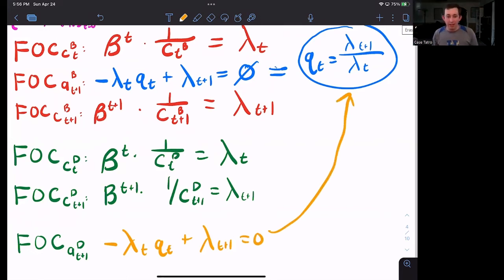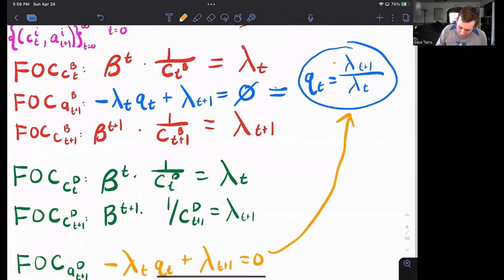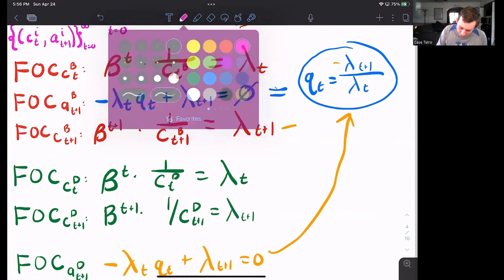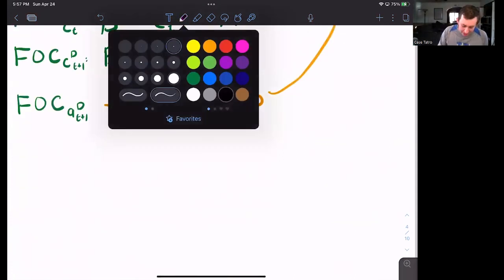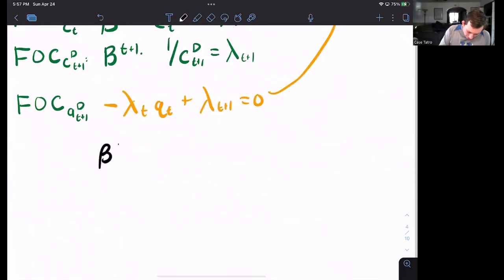Now let's go ahead and start combining some first order conditions. So this is lambda T plus one. This is lambda T plus one. We also have lambda T here, which is lambda T here. So what we can say is that beta T plus one over CT plus one Bill over beta T over CTB is equal to QT.